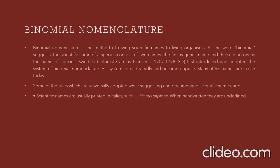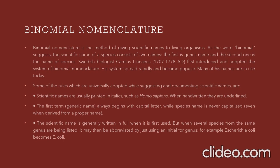Binomial nomenclature is the method of giving scientific names to living organisms. As the word 'binomial' suggests, the scientific name of a species consists of two names: the first is the genus name and the second is the species name. Swedish biologist Carolus Linnaeus first introduced and adopted the system of binomial nomenclature. His system spread rapidly and became popular, and many of his names are still used today.